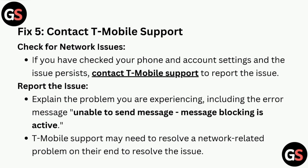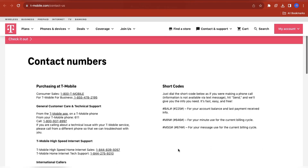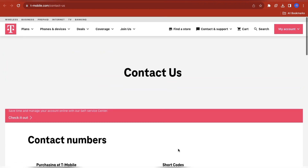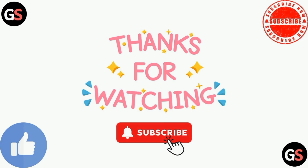Fix five is to contact T-Mobile support. If you have checked your phone and account settings and the issue persists, contact T-Mobile support to report the issue. Explain the problem you are experiencing, including the error message 'unable to send message, message blocking is active.' T-Mobile support may need to resolve a network-related problem on their end. Thanks for watching our video.